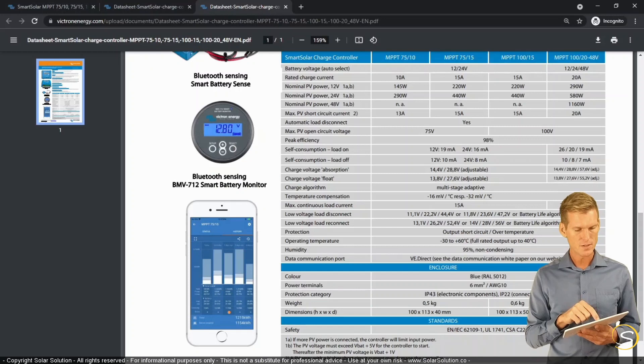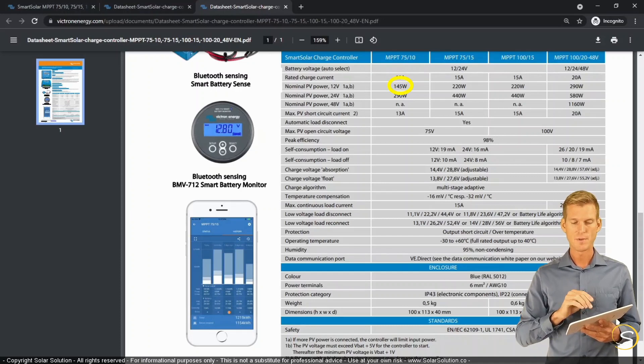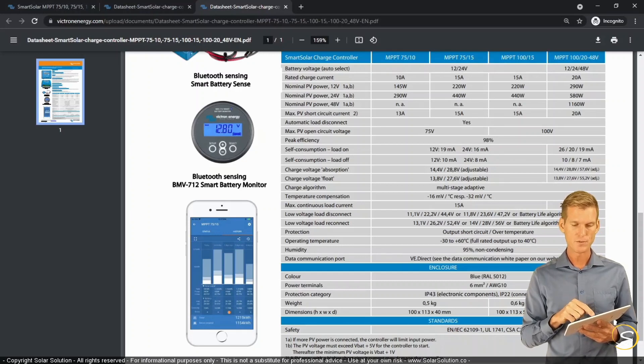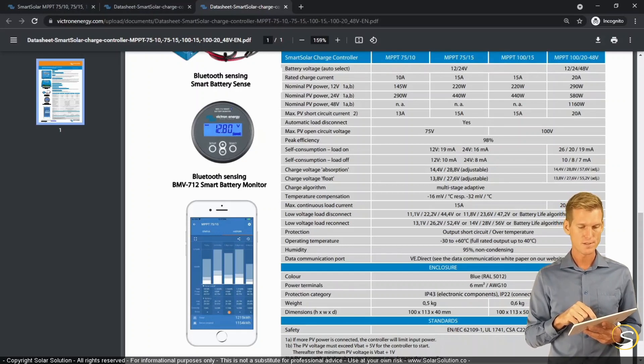Then it also indicates the nominal PV power for a 12 volt system. It will be 145 watts, which kind of makes sense. Because if you multiply the 10 amps times a relatively high charging voltage of 14.5, you can see this by the end of the charging stage of a battery. Then you get 10 times 14.5, you get 145 watts.